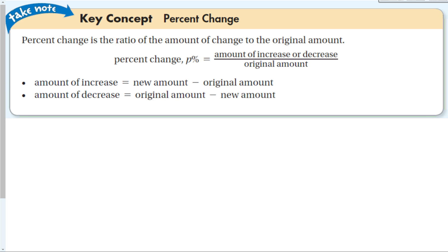The formula is pretty much the same for both. Percent change is the ratio of the amount of change to the original amount. So percent change P equals the amount of the increase or decrease divided by the original amount. This ratio gives a decimal, which we convert to a percentage by multiplying by 100. We want to keep numbers positive, so for an increase: new amount minus original. For a decrease: original amount minus new amount, since the new amount is smaller.